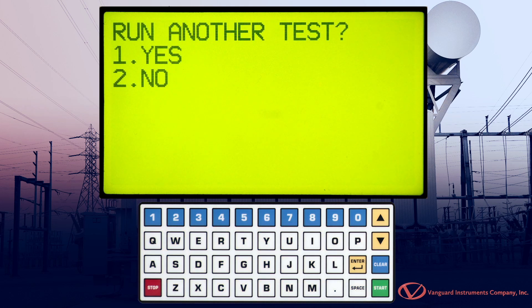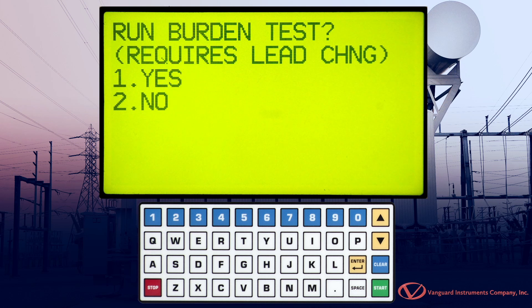You can now run another test, but in our case, we'll press 2 for no. We're now given the option to perform a burden test. We'll press 2 for no.